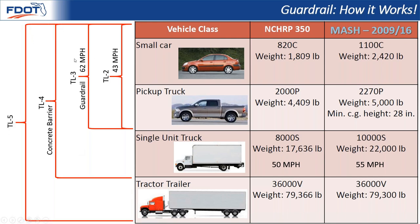TL5 adds all the same TL4 tests with the addition of a tractor-trailer. We don't see a lot of TL5 barriers throughout the state — there are a few used on bridges and in what we call pier protection barrier, for older bridges with underpasses in close proximity to vehicles where the bridge piers weren't designed for impact loads. There is also TL6, which starts adding in much larger vehicles like tanker trucks. There are probably only a handful of installations of those types of barriers throughout the entire country, so we don't spend a lot of time discussing those generally.